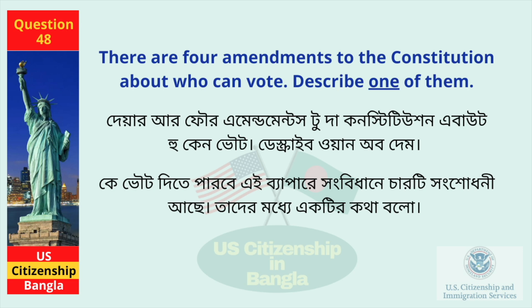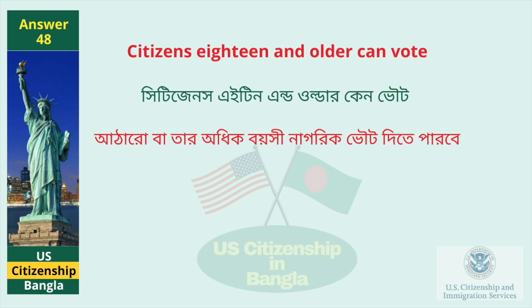There are four amendments to the Constitution about who can vote. Describe one of them. Citizens 18 and older can vote.